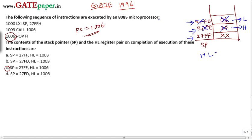HL register pair contents are going to be 1006 and stack pointer is present at 27FF. So this is the right answer. SP is equal to 27FF and HL is 1006, stack pointer and HL register contents. So the right option for this one is C. Thank you.